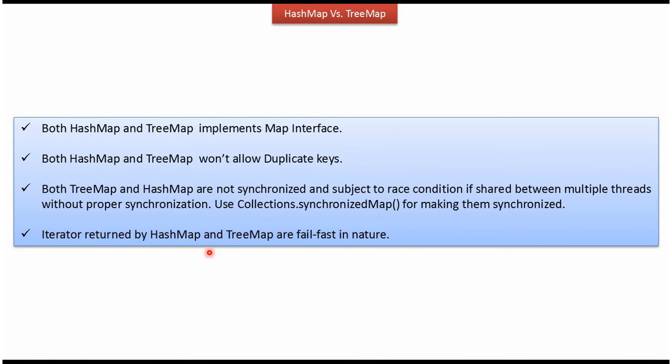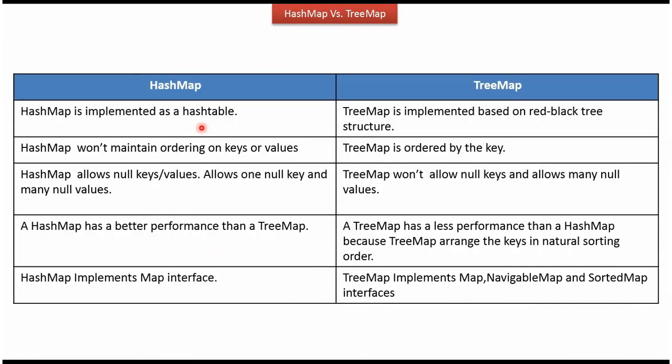Now we will see the differences between HashMap and TreeMap. HashMap is implemented as a hash table, while TreeMap is implemented based on a red-black tree structure. HashMap won't maintain ordering on keys or values, but TreeMap is ordered by the key.